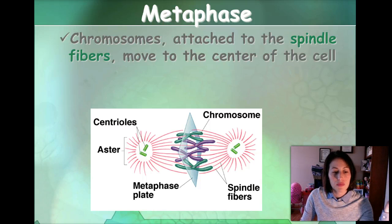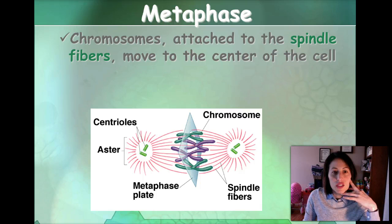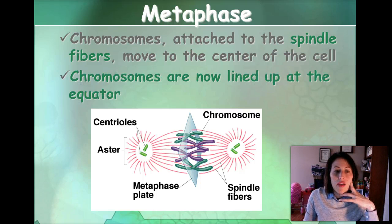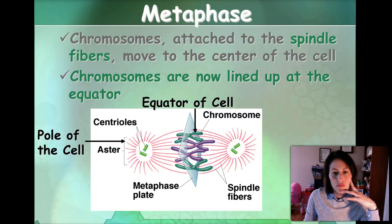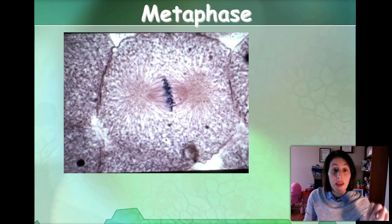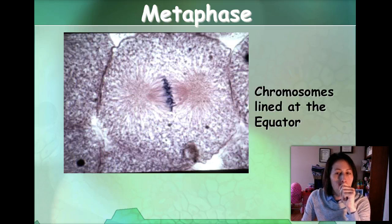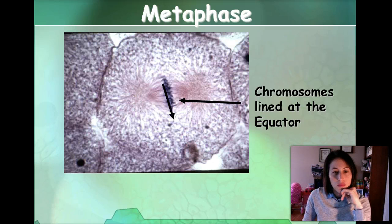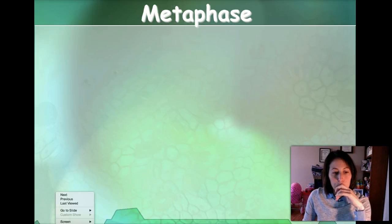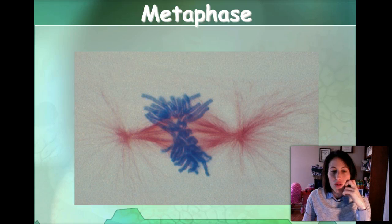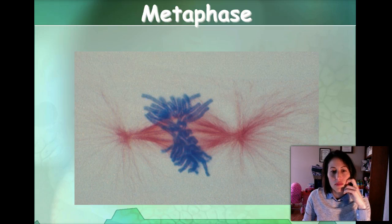So metaphase: line up in the middle. The chromosome attaches to the spindle fibers and moves to the center of the cell, and now they're lined up at the equator. Here's an actual picture of an animal cell where the chromosomes are lined up, and you can see the spindle fibers are formed and have attached to the chromosomes in the center. And there's another picture of a cell in metaphase.